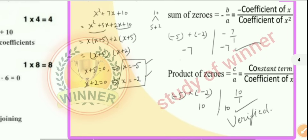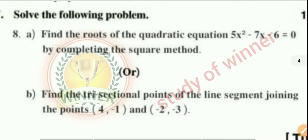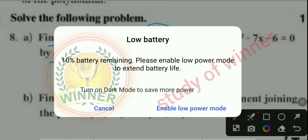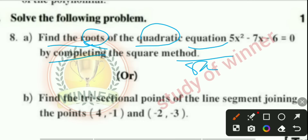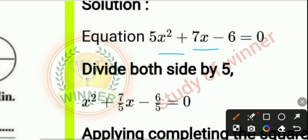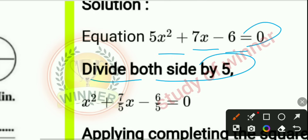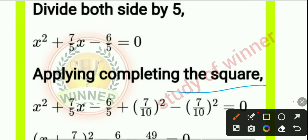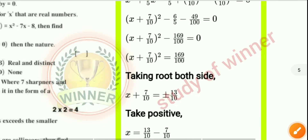Question 8a: find the roots of the quadratic equation 5x² - 7x + 6 = 0 by completing the square method. Divide both sides by 5, then apply the completing the square method. The full working and answer are shown on screen.